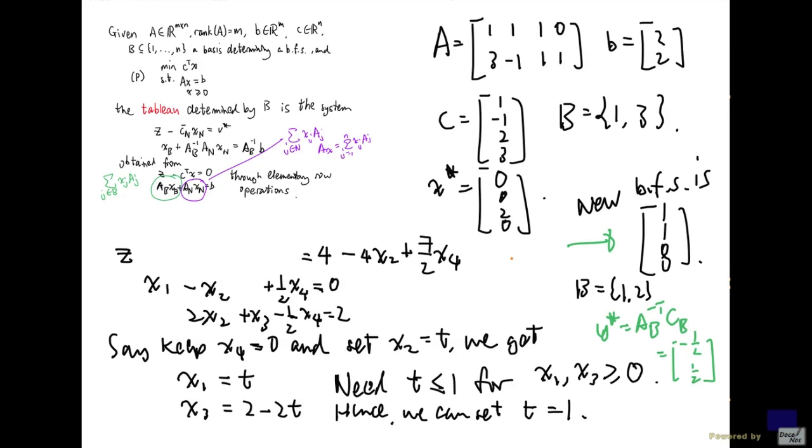So, this is optimal. So, this is an example that shows how you can find the improving direction and gets you to a new basic feasible solution, which in this case, it is optimal for the problem.